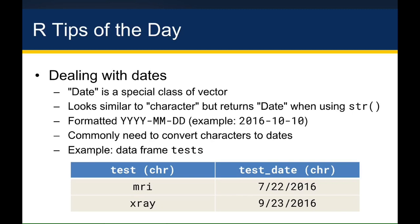One is to run the str function — the structure function — on either the entire data frame or just on that column, where you say data frame dollar sign column. It will return the word 'date' if it's stored correctly as a date, and if it's stored as a character variable, it'll return 'chr' to tell you that it's a character variable.